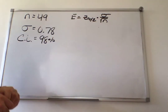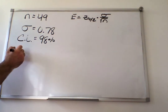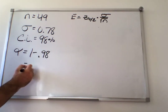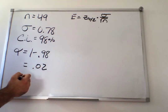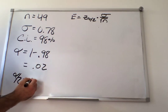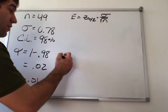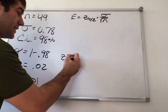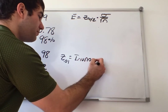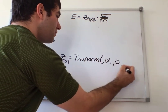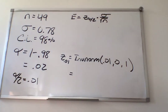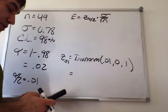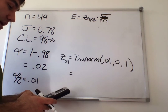The error formula is z alpha divided by 2 times sigma divided by square root of n. We already have sigma and n. The only thing we're missing is z alpha divided by 2. Alpha is 1 minus the confidence level, so 1 minus 0.98, which is 0.02. So then alpha divided by 2 is 0.01. To find z of 0.01, that's equal to inverse norm of 0.01, 0, 1. Let me calculate that on my calculator.